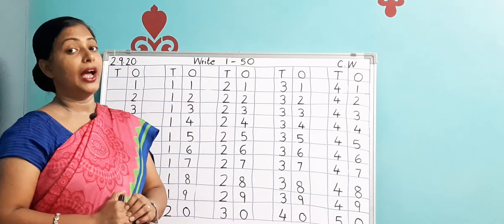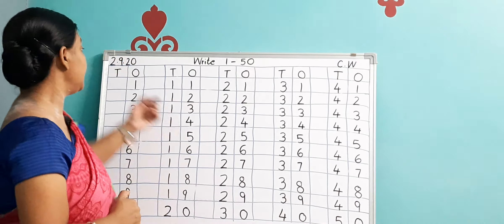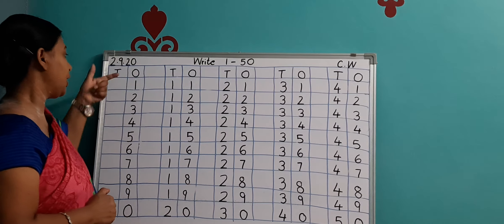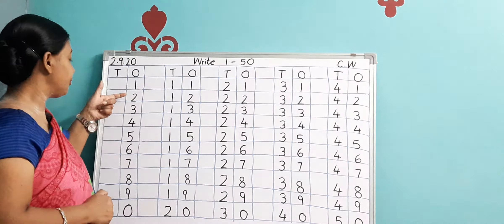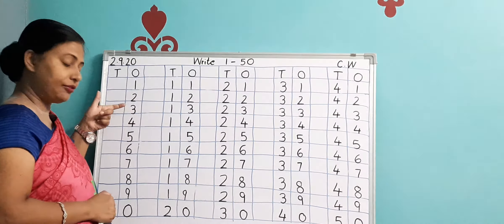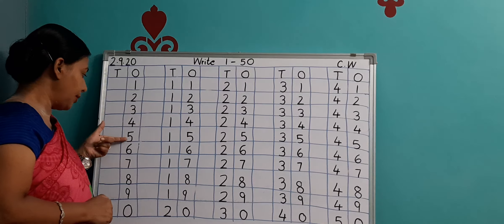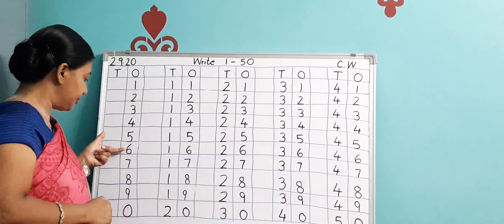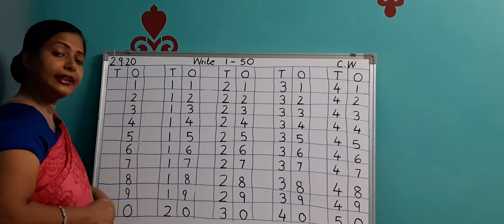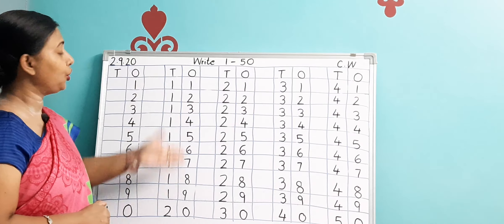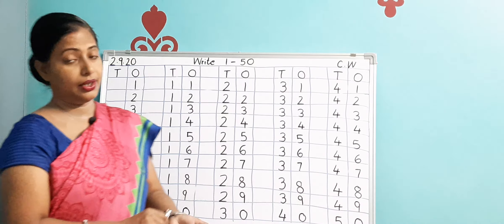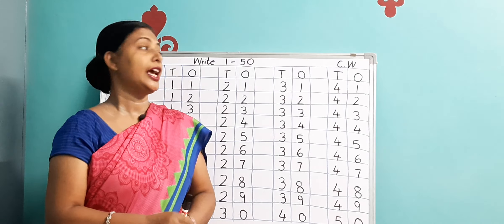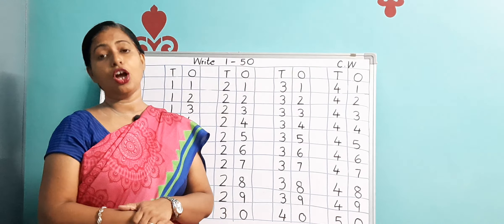Learn it by heart and try to recognize which number comes after which. Like after 1 comes 2, after 2 comes 3, after 3 comes 4, after 4 comes 5, after 5 comes 6, then 7, then 8, then 9, then 10. In the same manner you have to learn this — 11, 12, 13 counting, you have to learn it. Do the work very neatly in your maths 1 copy. God bless you children.